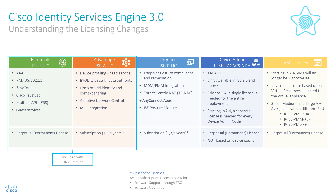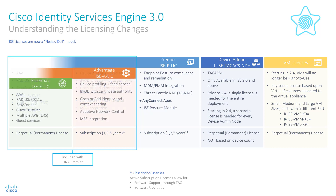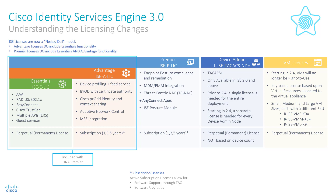The name changes make sense and now align with the Cisco DNA Center style of licensing. The other great thing to come from aligning with this type of licensing is the nested model. This means that all the features in Essentials are now included in Advantage, and the Premier license includes all the features from both Essentials and Advantage.